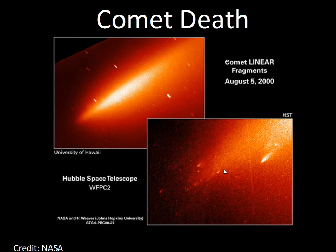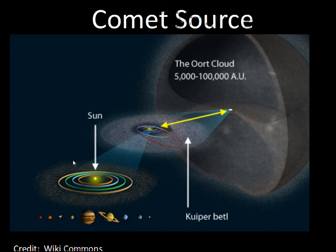Analyzing comet orbits reveals two groups: short period and long period. Short period comets evidently have a source in what's called the Kuiper Belt, a region beyond Neptune where Pluto also orbits. It's a disk-shaped region, not completely spherical. Objects there can have their orbits disturbed by Neptune and Uranus, or by encounters with other Kuiper Belt objects, bumping them onto a path closer to the Sun. Generally, a comet needs to get inside the orbit of Mars to warm up enough to melt ices and form a tail.